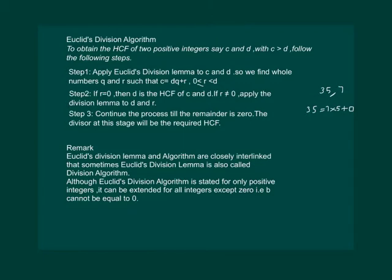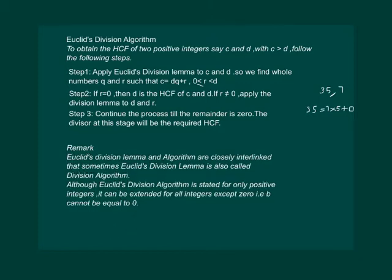There are certain things that we need to note. Euclid's Division Lemma and Algorithm are very closely interlinked, and that is why sometimes Euclid's Division Lemma is also known as Euclid's Division Algorithm. And secondly, although Euclid's Division Algorithm is stated for only positive integers, it can be extended for negative integers also. That means divisor cannot be equal to 0. Euclid's Division Lemma and Algorithm have several applications. Let us look at some applications.